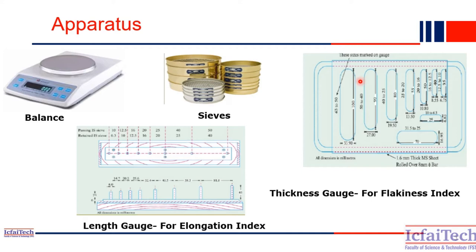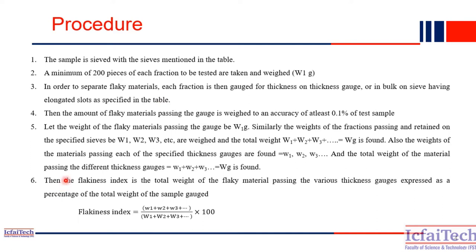For the flakiness index, we find out how thin the aggregate is. By definition, if the least dimension — that is, thickness — is less than three-fifths of the mean dimension of the aggregate, then we call it a flaky aggregate. Similarly, if the aggregate's largest dimension, meaning the length, is greater than one-and-a-half times the mean dimension of the aggregate, then we call it an elongated aggregate.